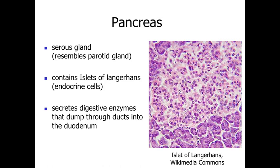Taking a look at the pancreas, we want to note that it's primarily a serous-secreting gland, so it's going to resemble our parotid salivary gland. The difference, though, is that we're going to have these clusters of pale endocrine-secreting, hormone-secreting cells within the islets of Langerhans. In the image on this slide, we've got the pale-staining islets of Langerhans, and then the serous-secreting digestive enzyme-secreting cells scattered around them.